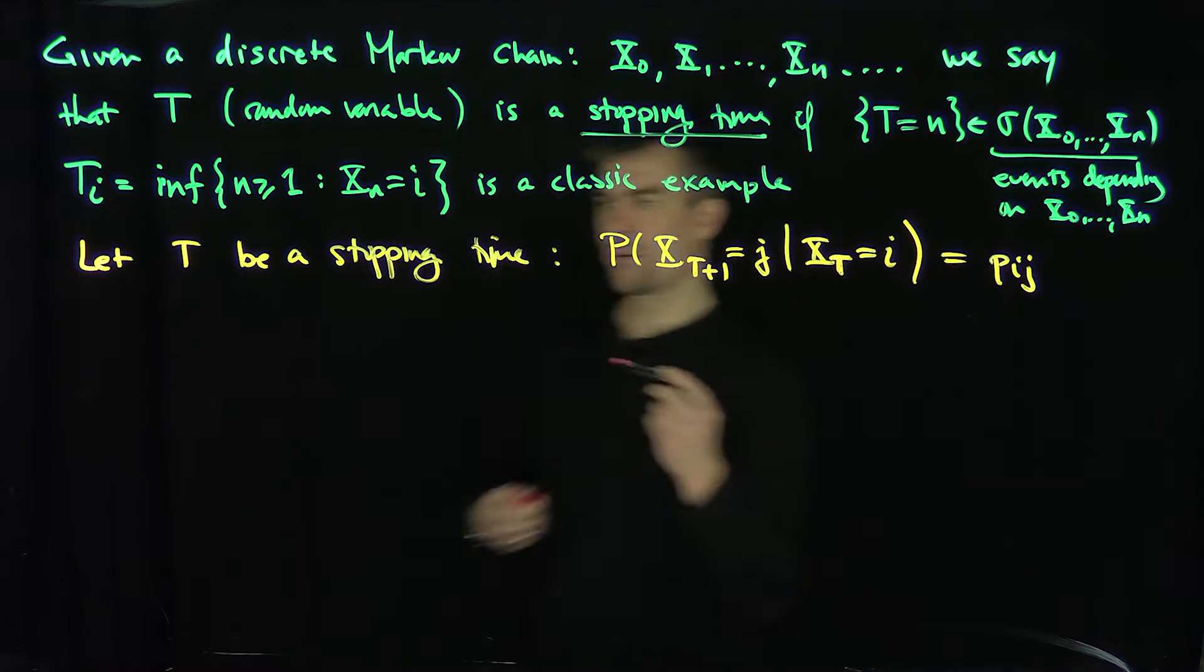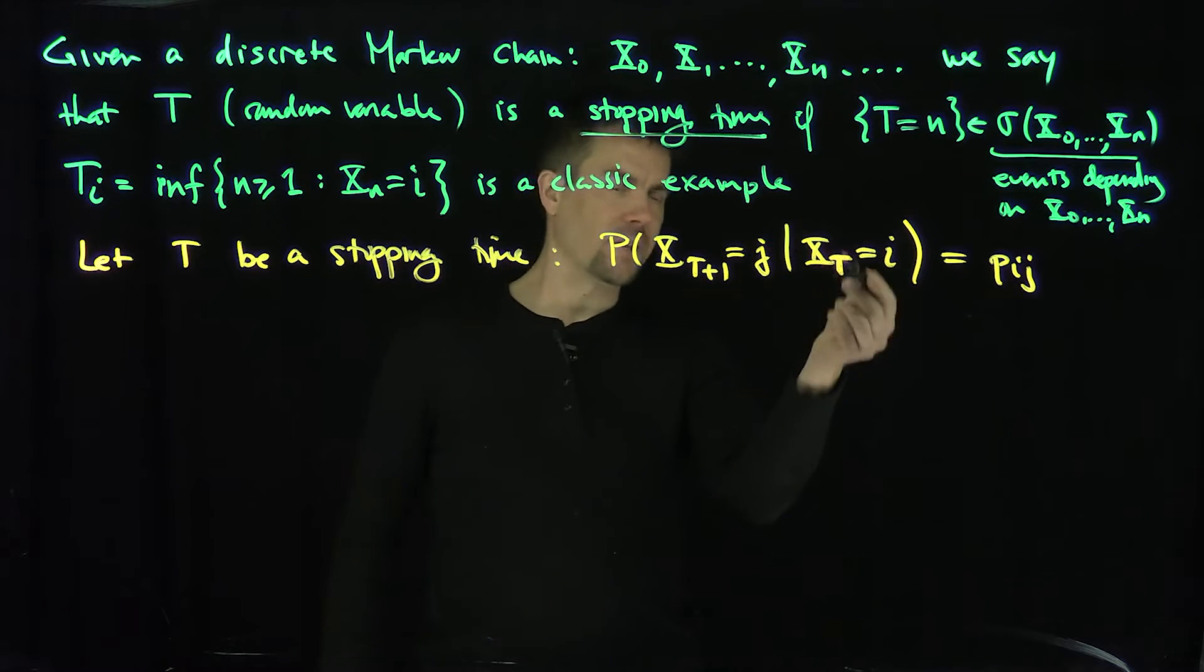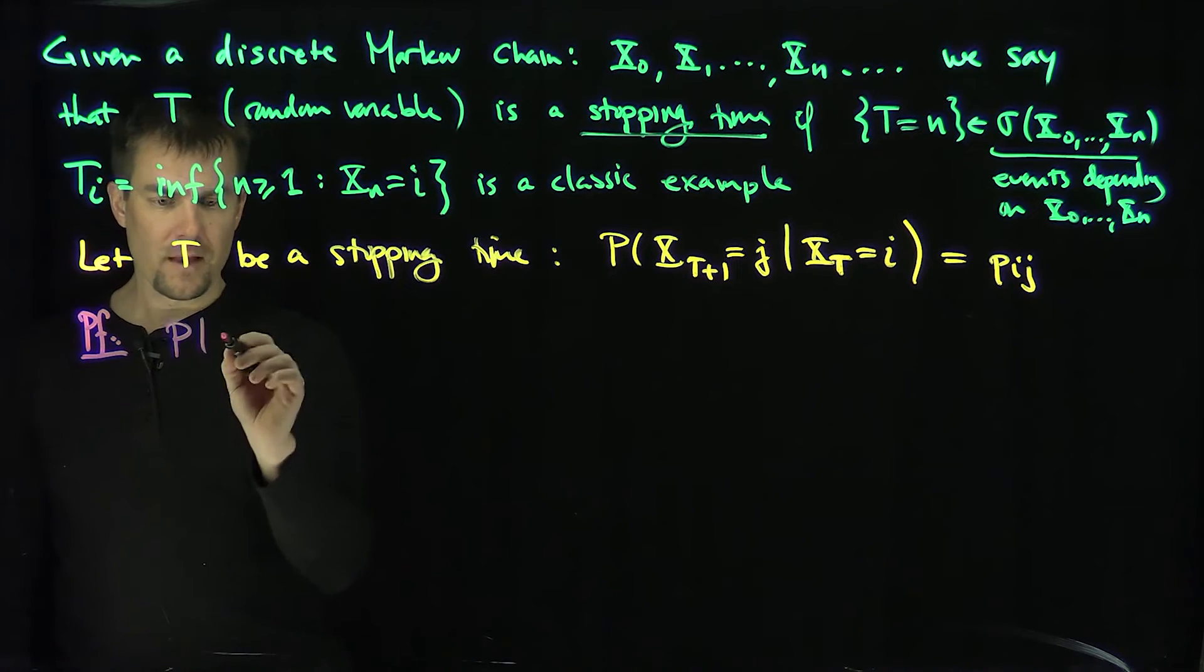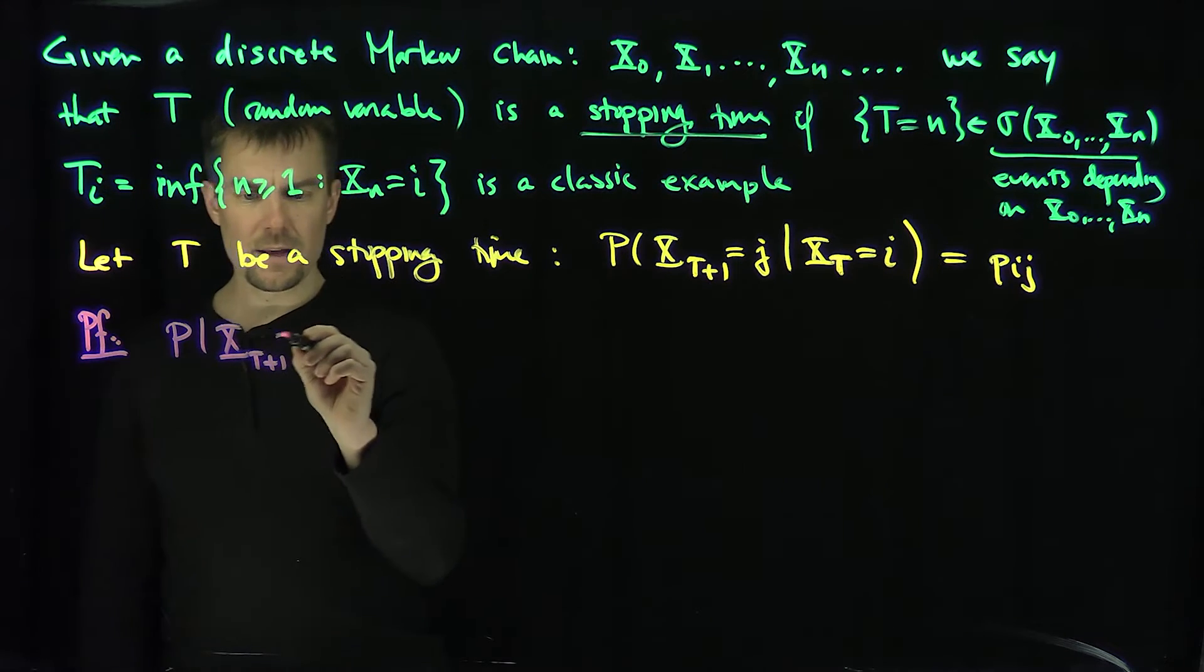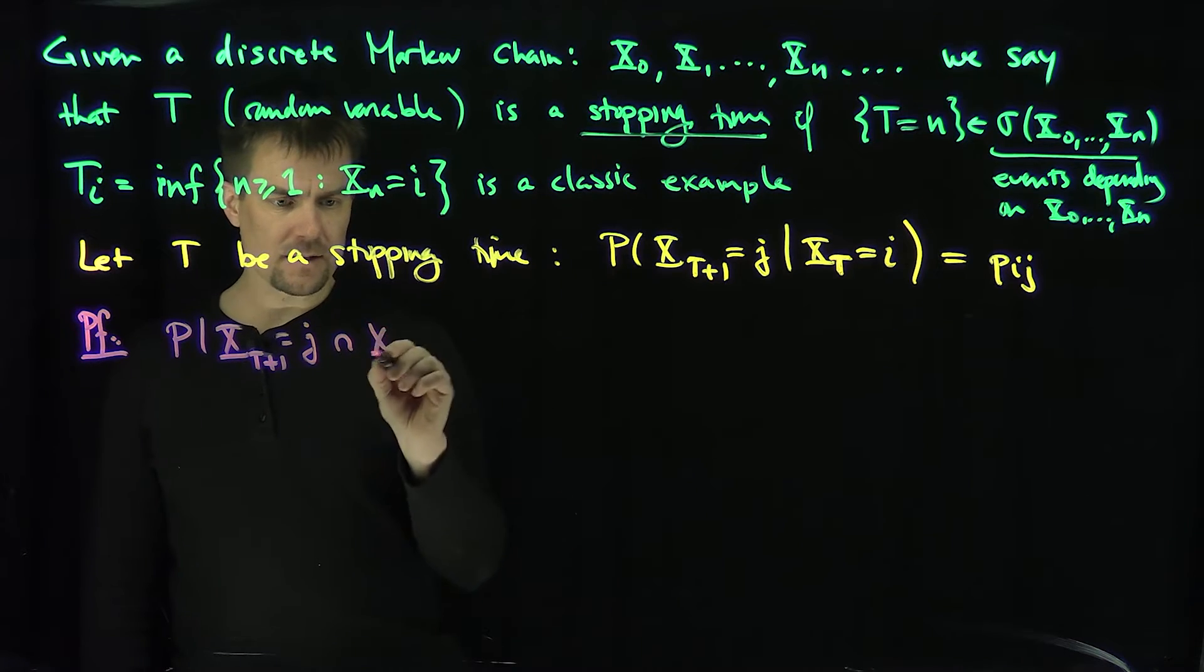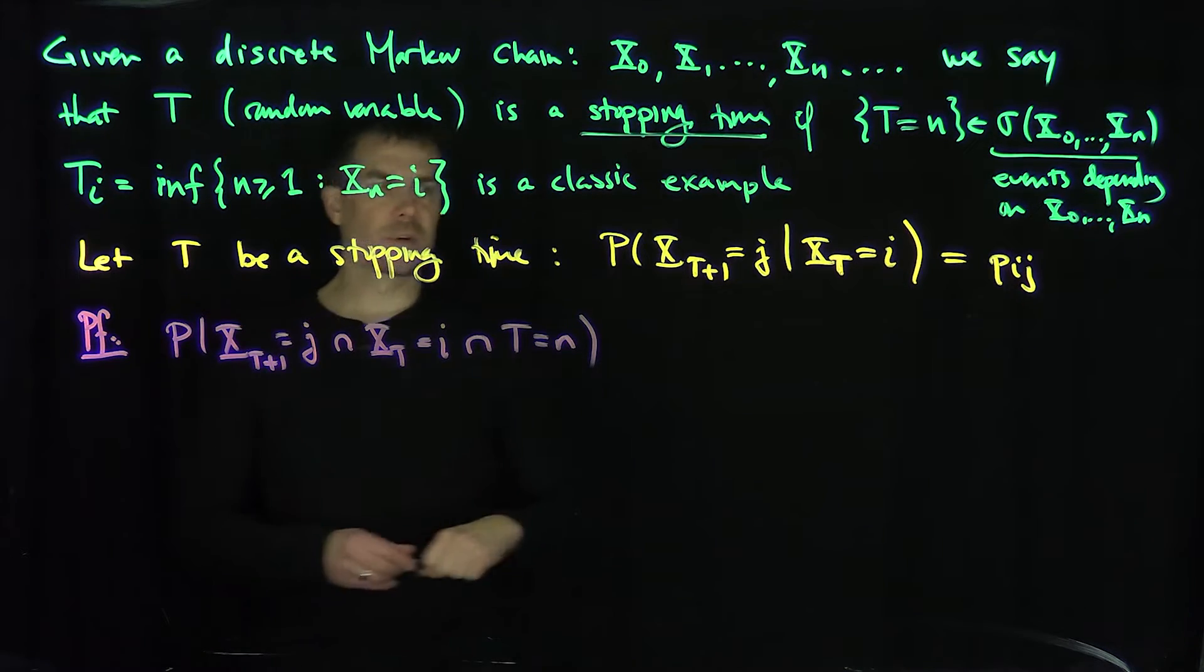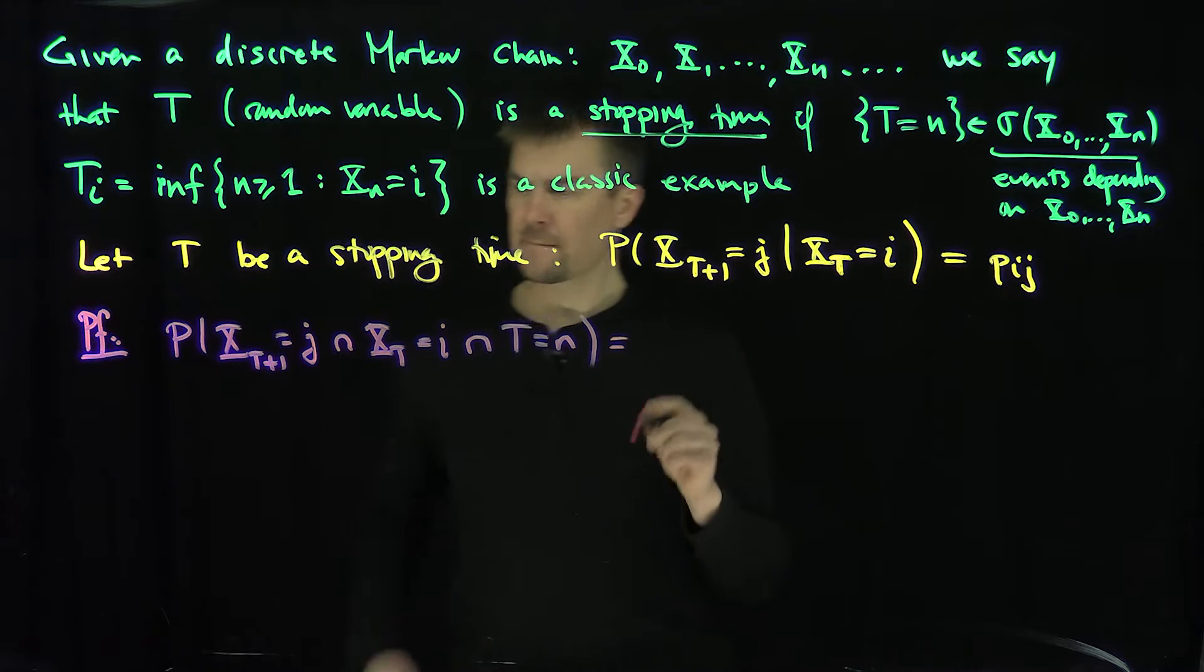Proof. What we're going to do is the following. Of course, this is given that t is equal to some fixed value n. So here's the proof of this fact. Let's compute the probability that x_t plus 1 is equal to j and x_t is equal to i and t is equal to a value n. And so what I'm going to do now is I'm going to write this as the sum of what?